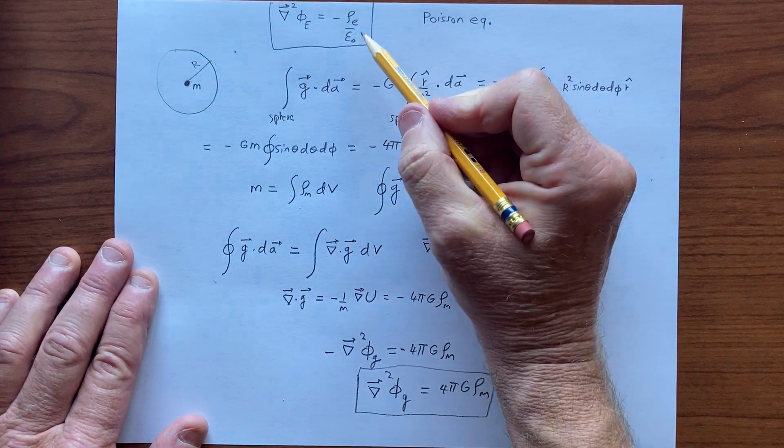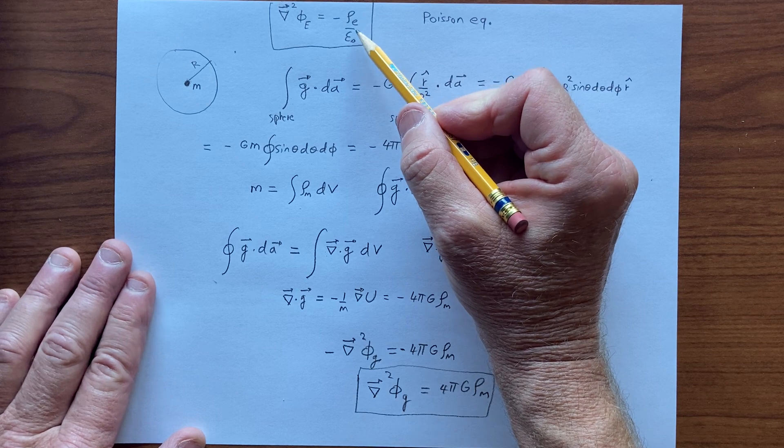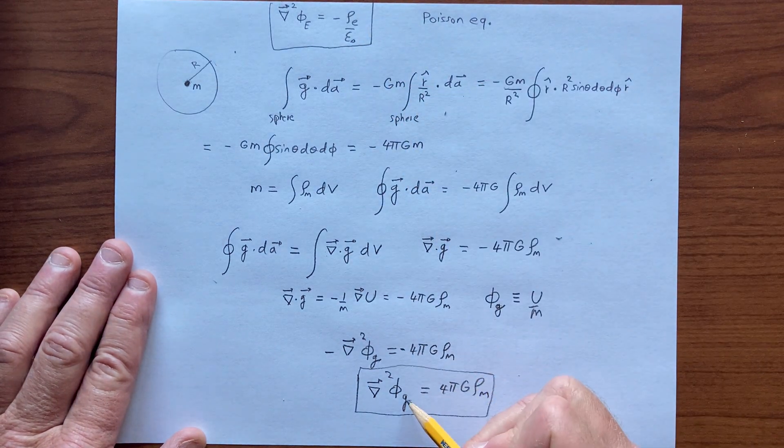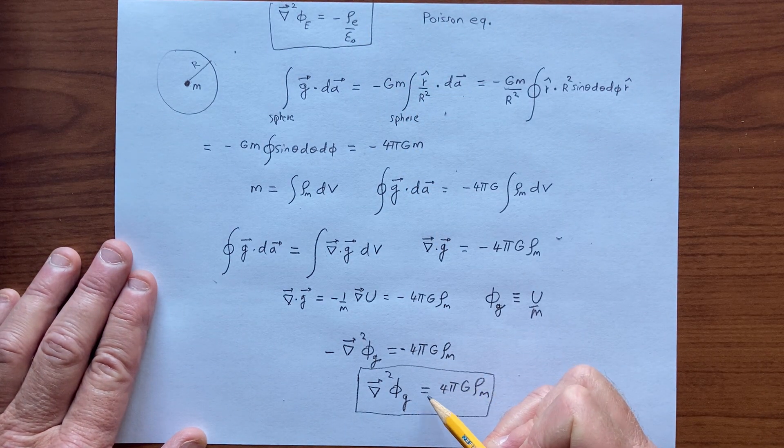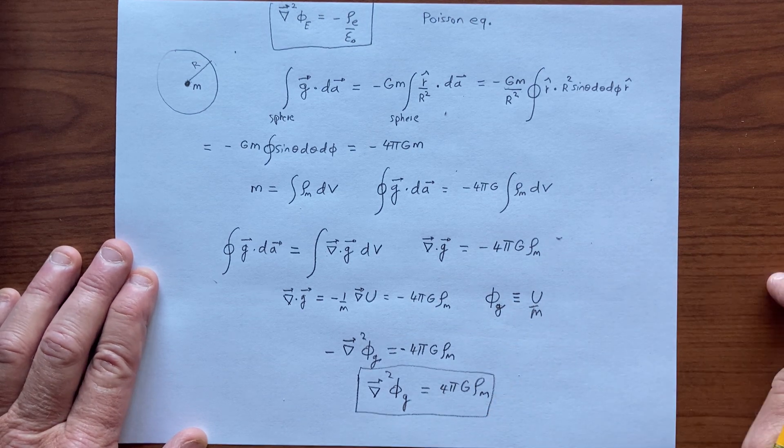Of course, the electric field diverges radially away from positively charged particles, whereas the acceleration field diverges radially towards positively charged mass, so there's a difference in sign there.